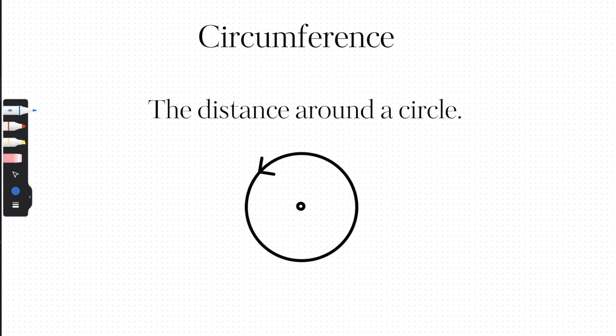The distance all the way around the circle — starting here and going all the way around — that distance is called the circumference.